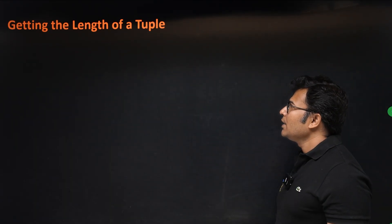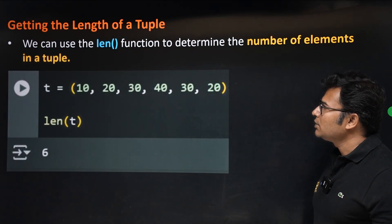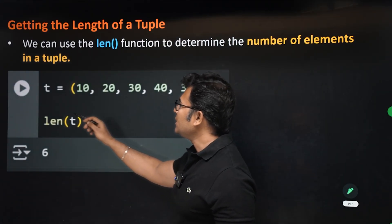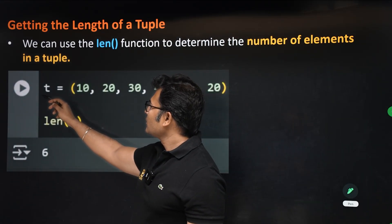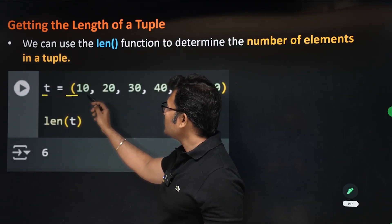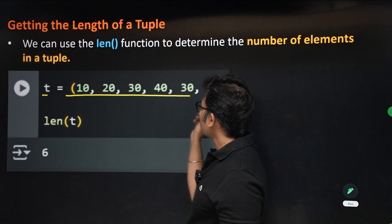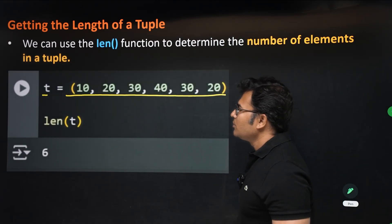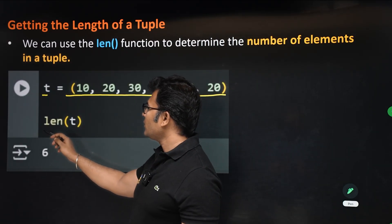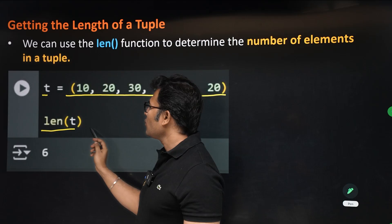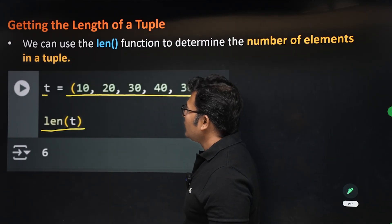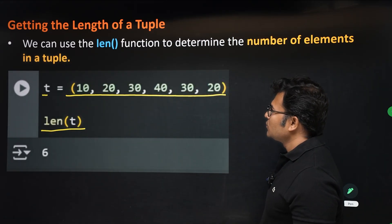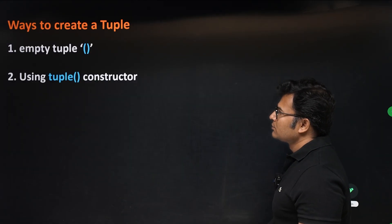To get the length of a tuple you can use the len() function. If you have a tuple t and want to get its length, you use len(t) and you'll get the length. In this example, the length is 6.